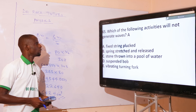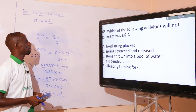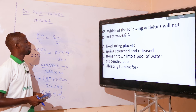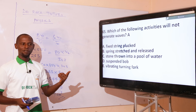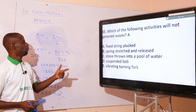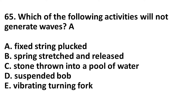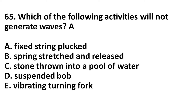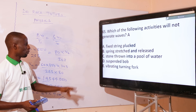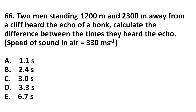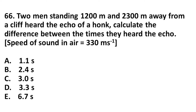Which of the following activities will not generate waves? Option A: a fixed string plucked — even playing guitar generates waves. Option B: a spring stretched and released — generates waves. Option C: a stone thrown into a pool of water — generates waves. Option D: a suspended bulb — that cannot generate waves. So the correct option is option D.